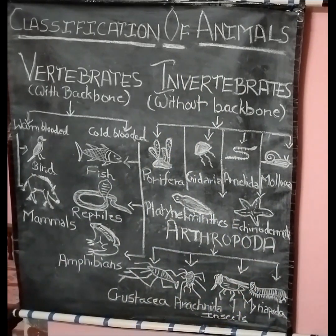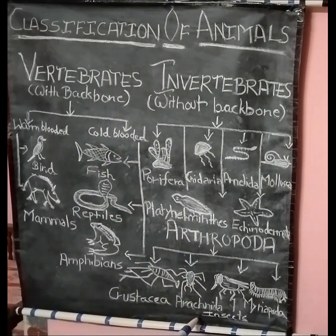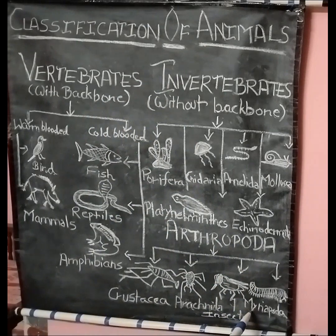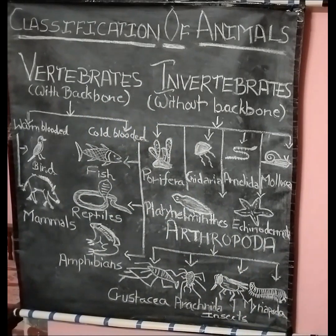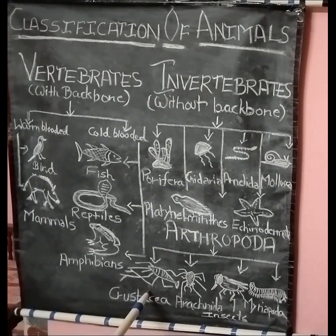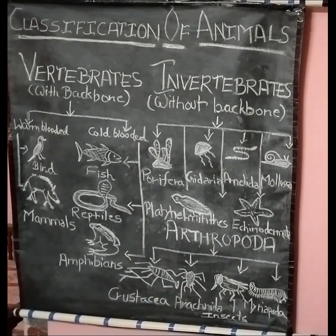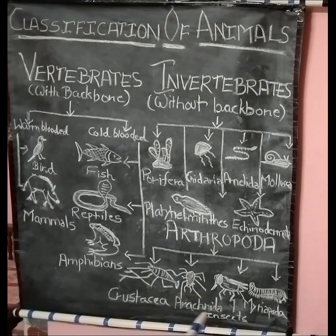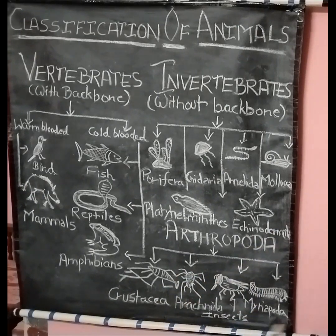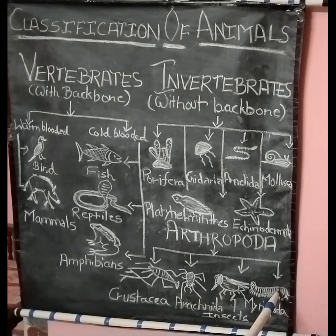Arthropoda includes Crustacea, Arachnida, Insects, and Myriapoda. Crustacea includes shrimp, krill, lobster, and prawns — all these come under Crustacea. Arachnida shows spider. Insects include cricket. And Myriapoda shows millipede.